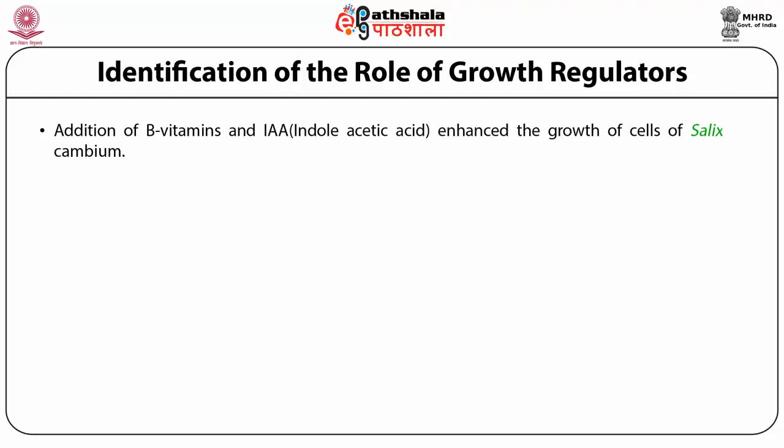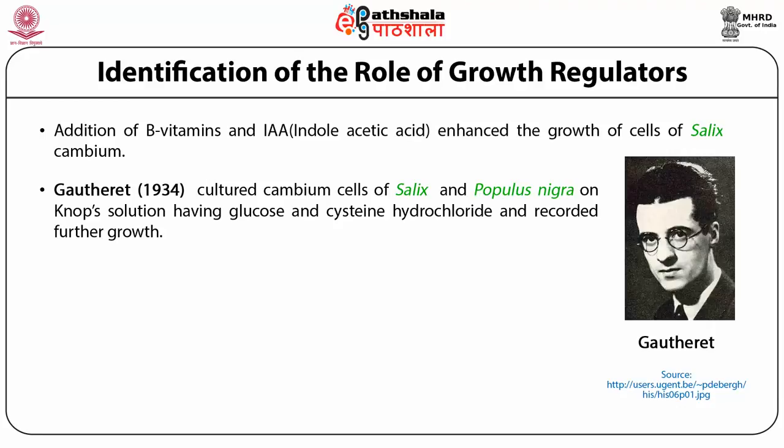As I said before, Haberlandt had postulated that there are growth enzymes which today we call growth regulators. With the discovery of IAA, Gautheret was successful in growing cambium cells of Salix and Populus nigra on Knop's solution, and further growth of Salix cambium was also possible.